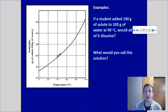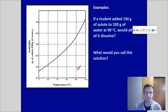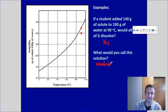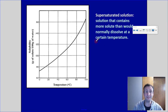It reaches saturation at 83 grams and I can't get any more to dissolve after that. If a student added 140 grams of solute to 100 mils of water at 90 degrees Celsius, would all of it dissolve? I'm adding 140 grams at 90 degrees Celsius — given that this is under the curve, yes, it would all dissolve. And what would you call the solution? Because I'm not yet at the saturation point, I would call this unsaturated. I could put more in and it would dissolve.